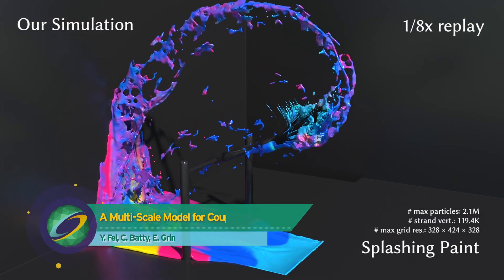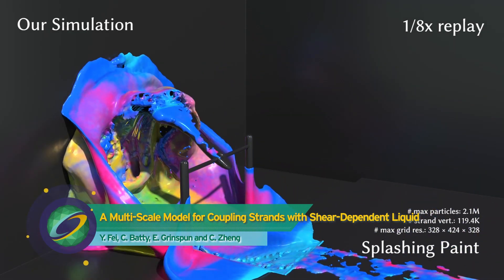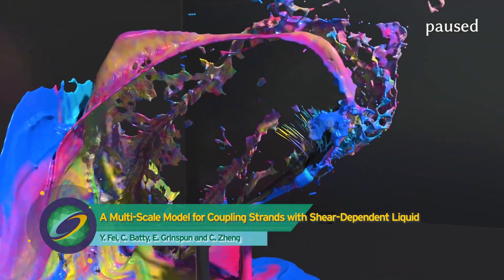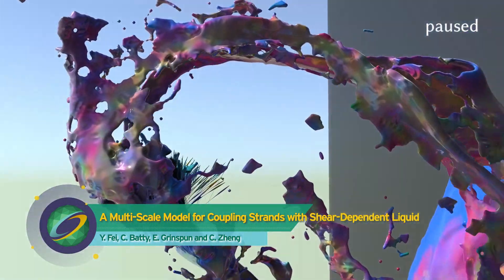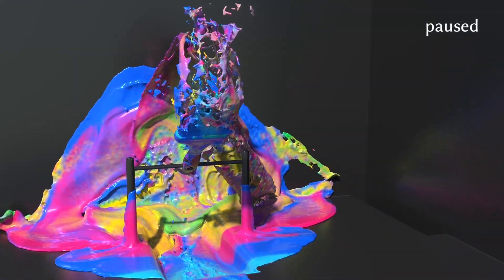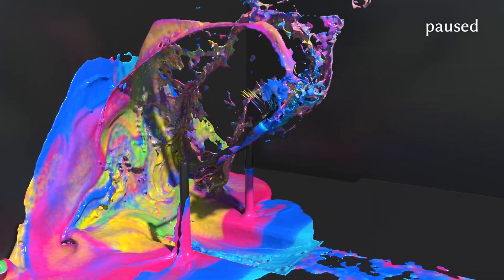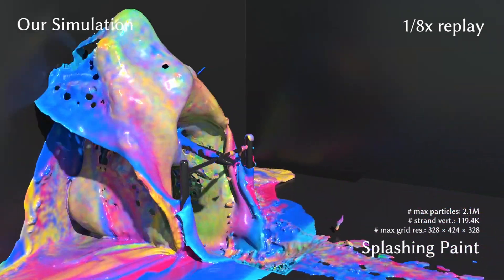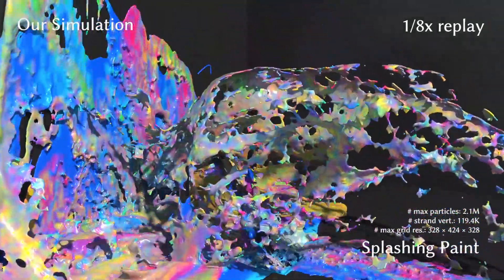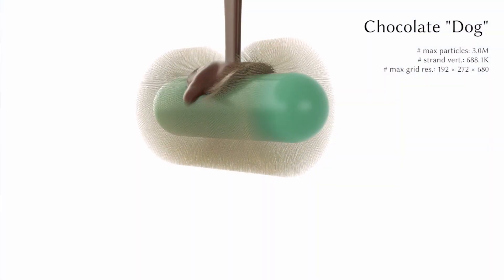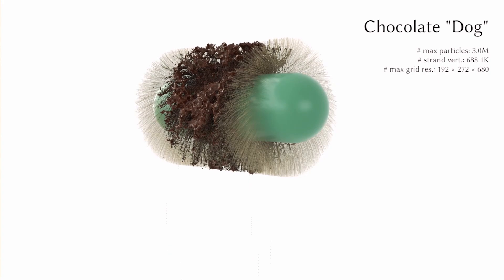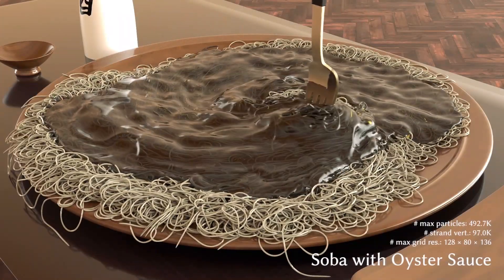Making visually accurate models of the interaction between fluids and solids is a long sought-after goal of computer graphics. In this example we see an accurate interaction between paint and the hairs of a paintbrush. The brush consists of strands modelled as discrete rods and the paint is a shear dependent liquid whose viscosity can change over time with strain. The model can cope with a series of challenging scenarios with different liquids involved in splashing, shaking and agitating, causing the strands to stick together and become entangled. Noodles and oyster sauce? Yum yum!